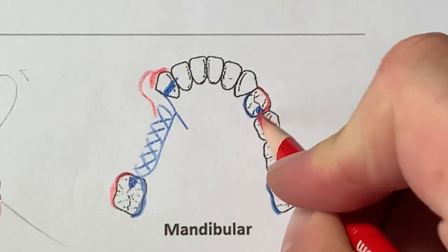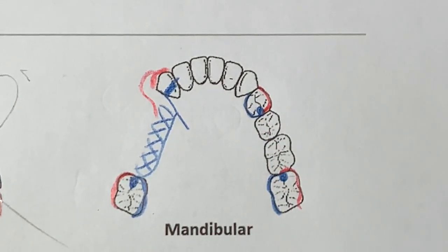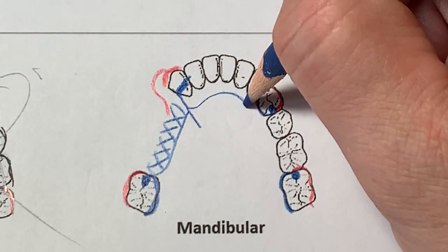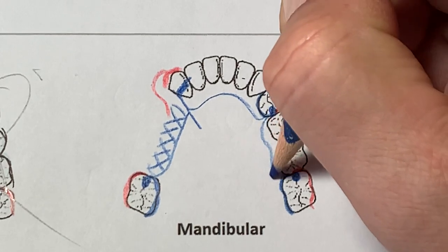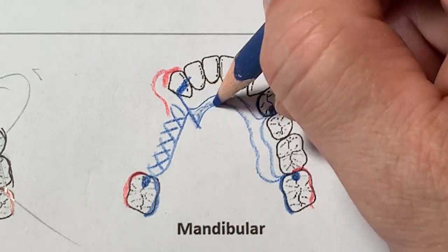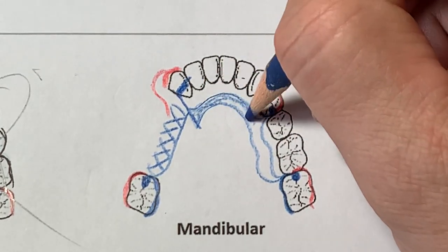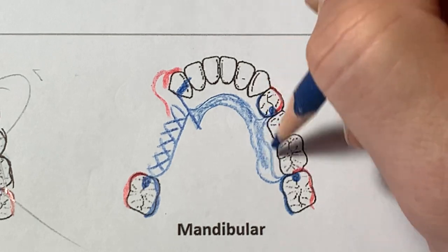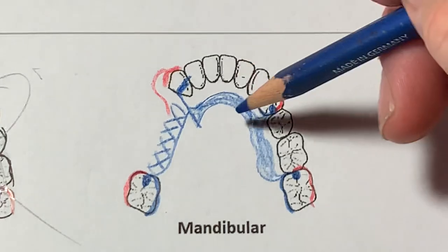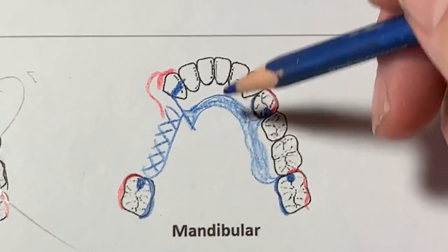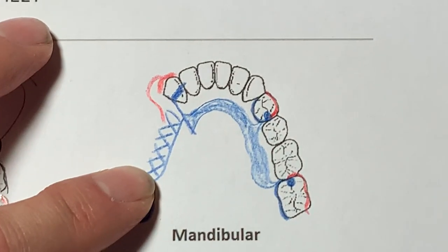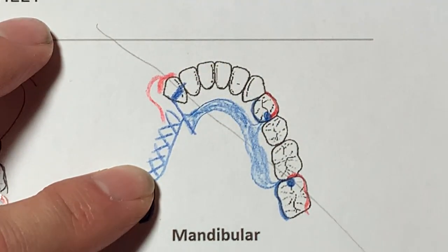And then step three would be auxiliary rest. There's no free end here, we don't need any. And then the Kennedy lingual bar, step four, major connector. Now this is assuming that we have the lingual sulcus depth. We can move up to an embrasure clasp. Again, if we lose this one in the future, then now we have our fulcrum line, which exists.